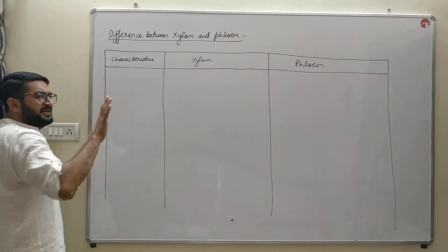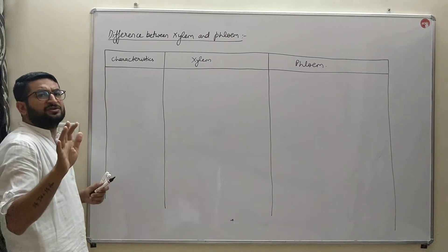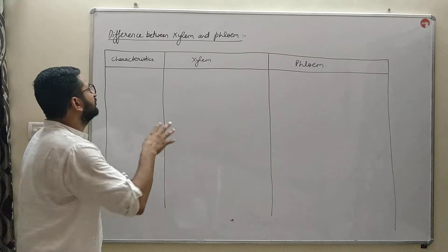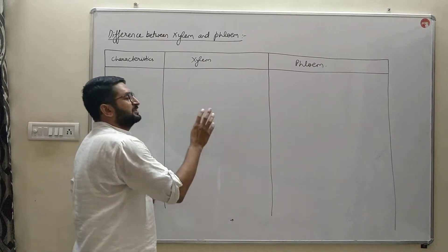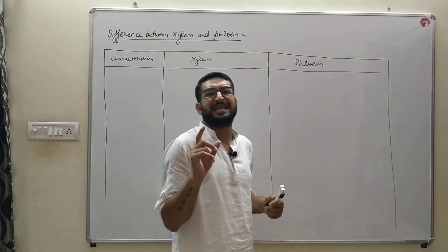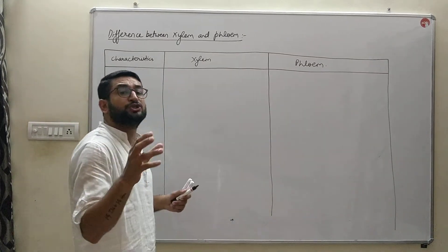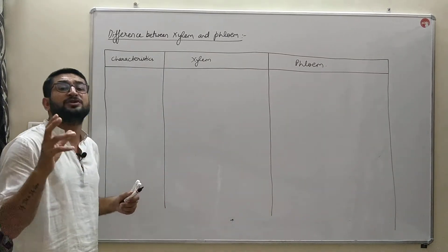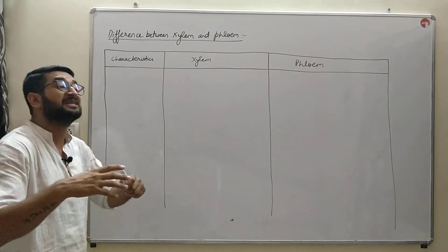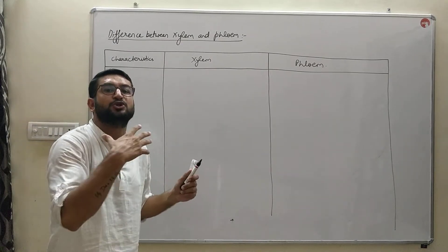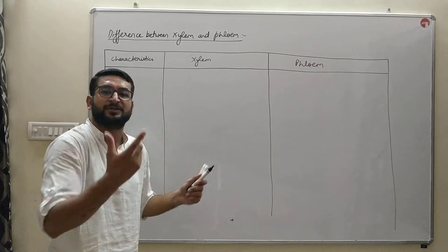For any difference in Class 9th or 10th, we have to make three columns matching. The first column is for the characteristics on which you will draw the difference, and you will make the difference between the two or three properties.